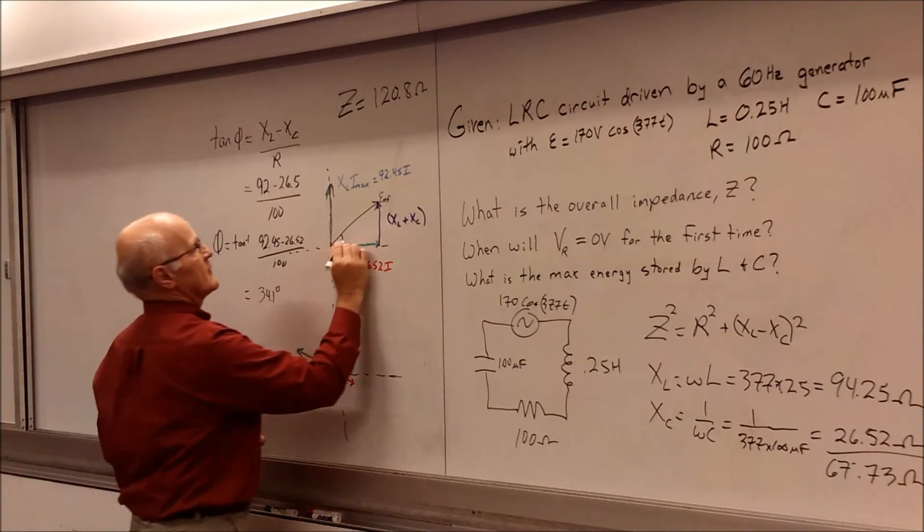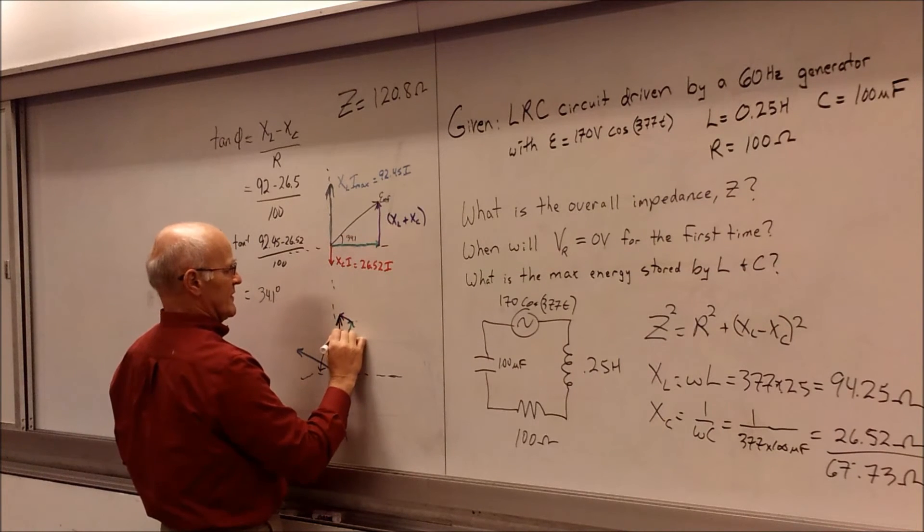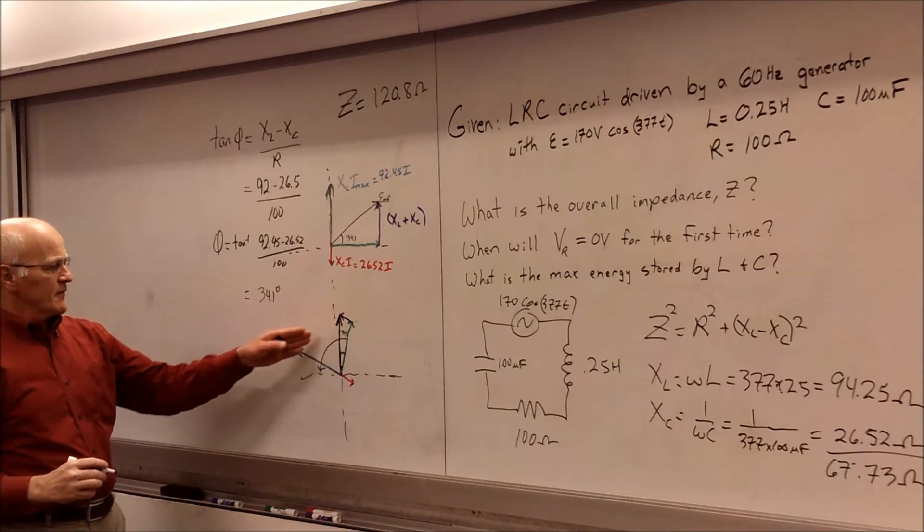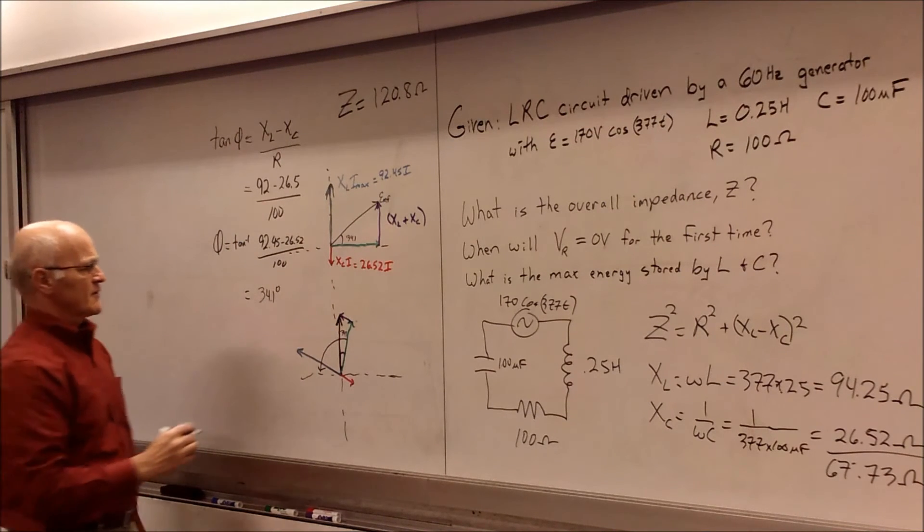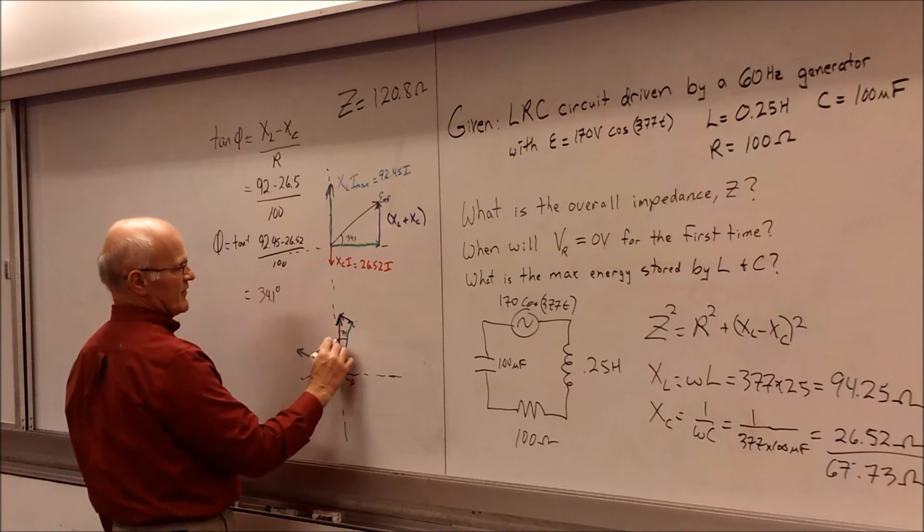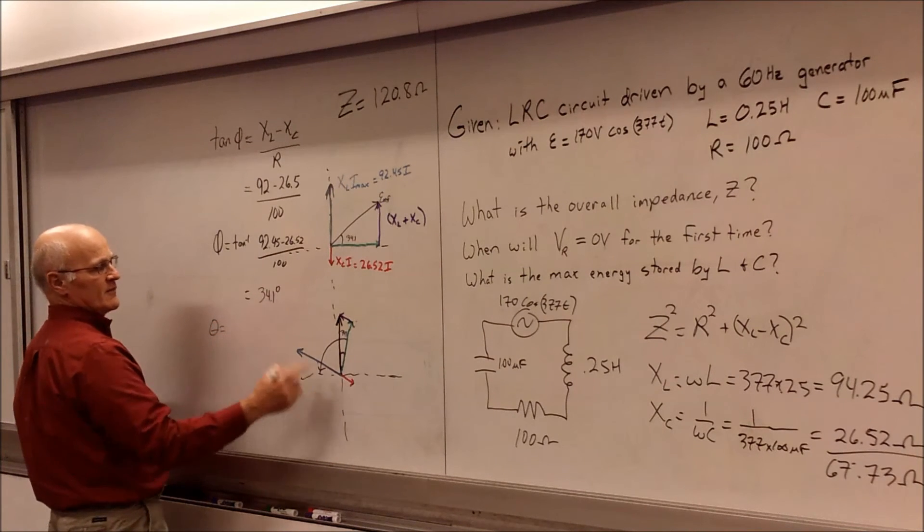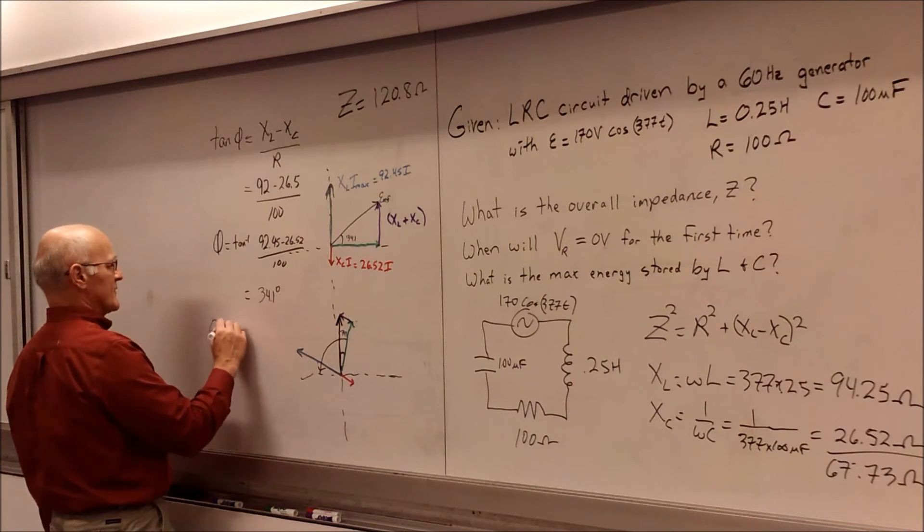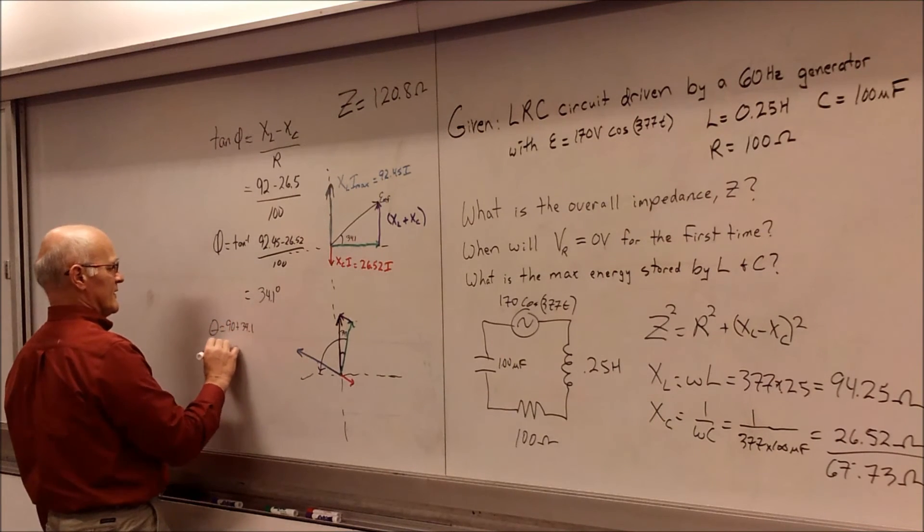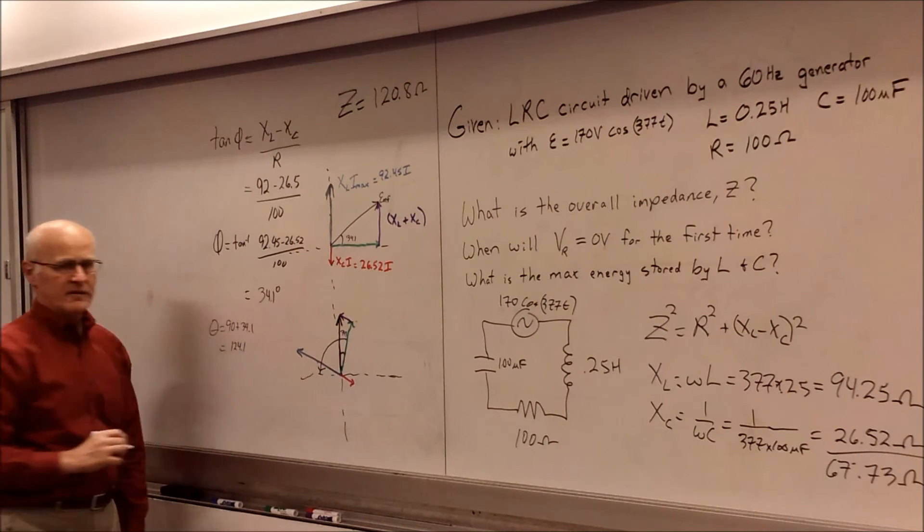All right, so we can label that in here if we want, 34.1. And it's also 34.1 in here. And so now I have to figure out how long it's going to take for this thing to rotate through. And so we go ahead and we say, well, we've got 90 degrees for this part of this angle plus the 34.1. So we find out that theta that has to be traveled for this to reach 0 for the first time is going to be 90 plus 34.1. So we end up adding that together, 124.1. And that's going to be our theta.